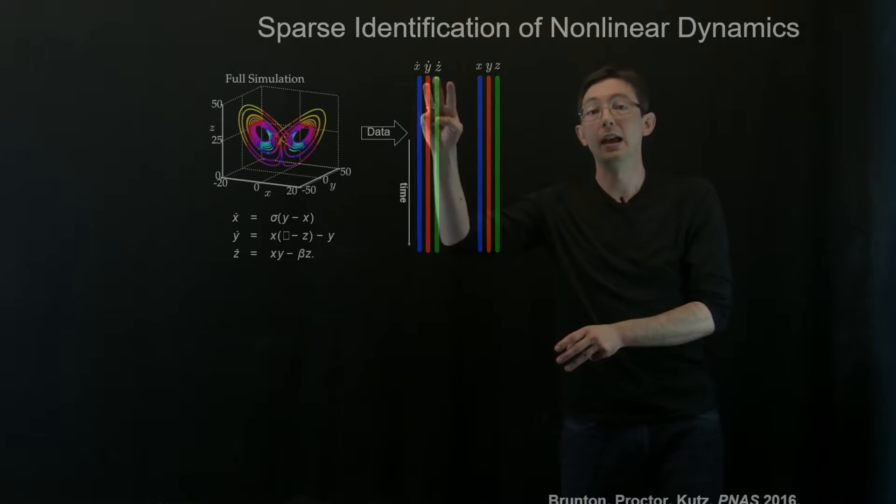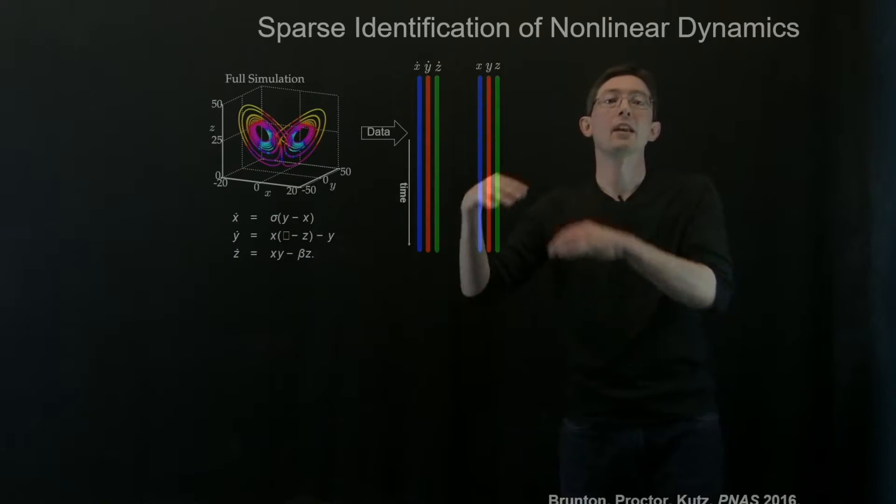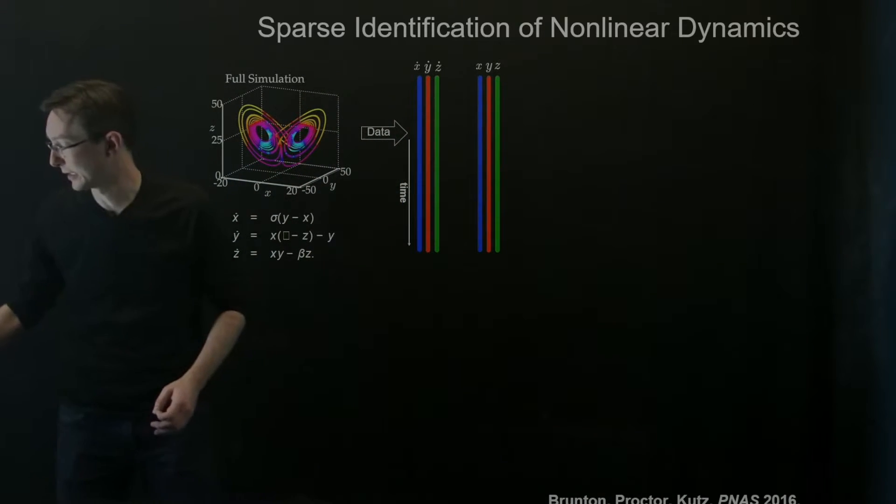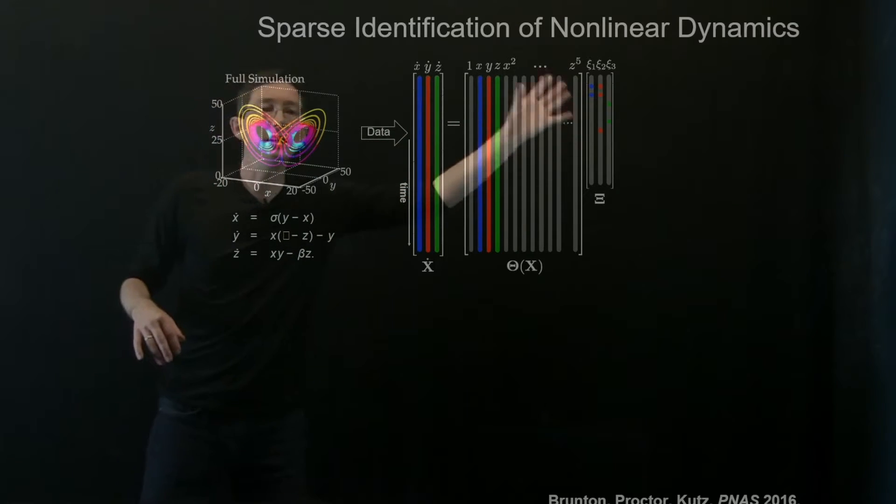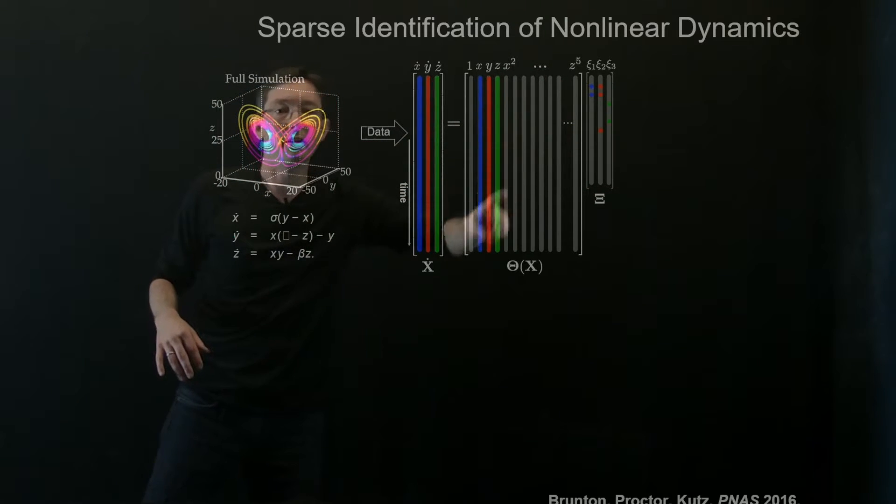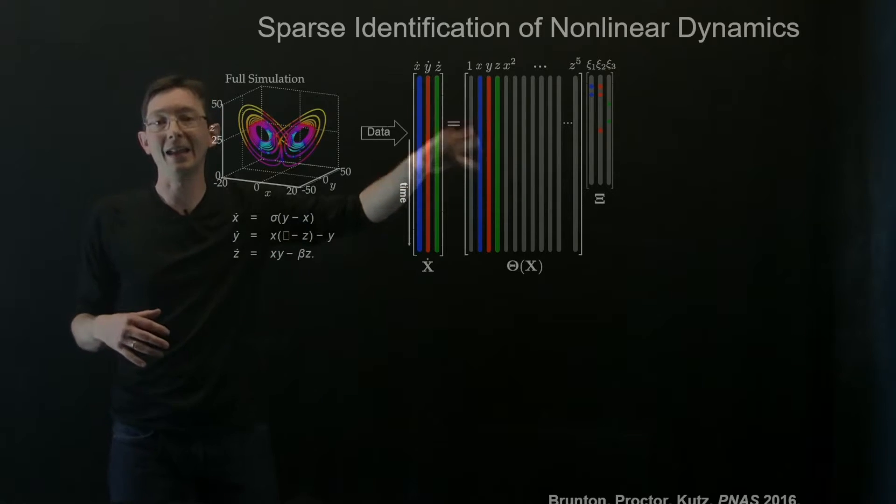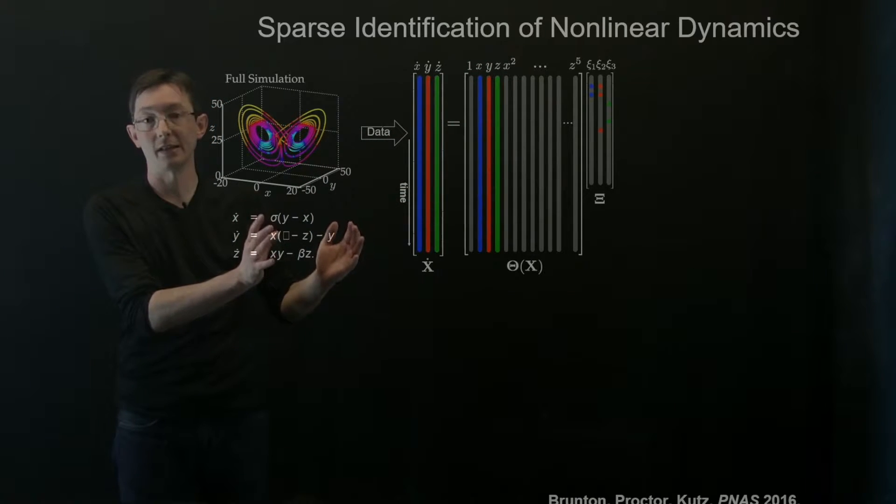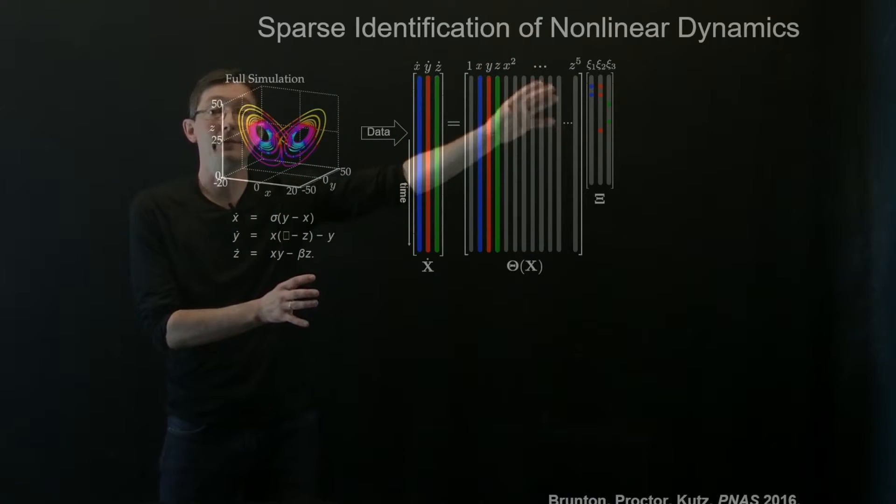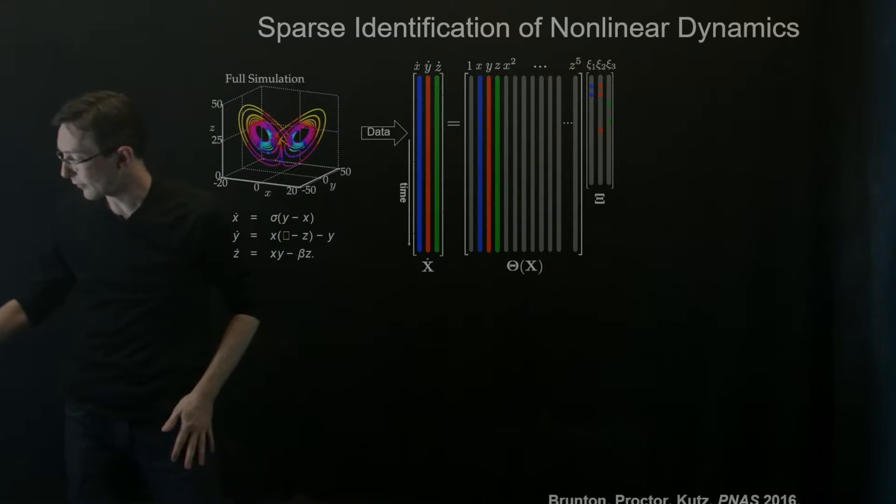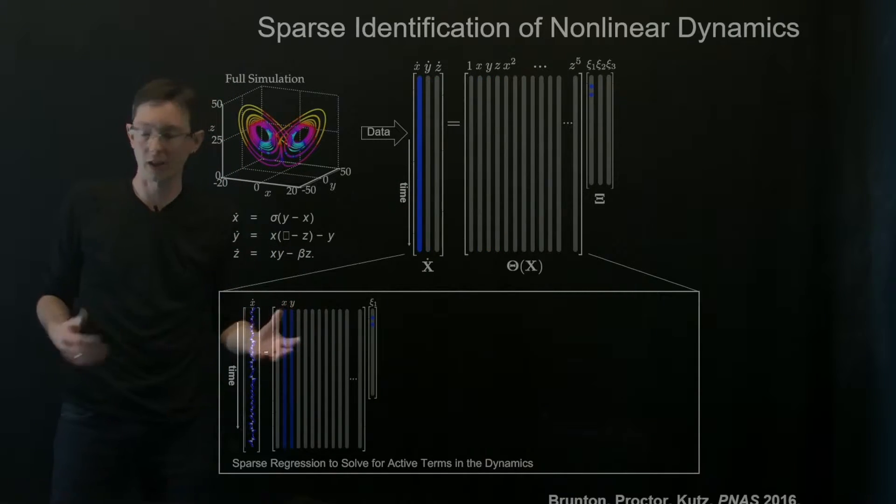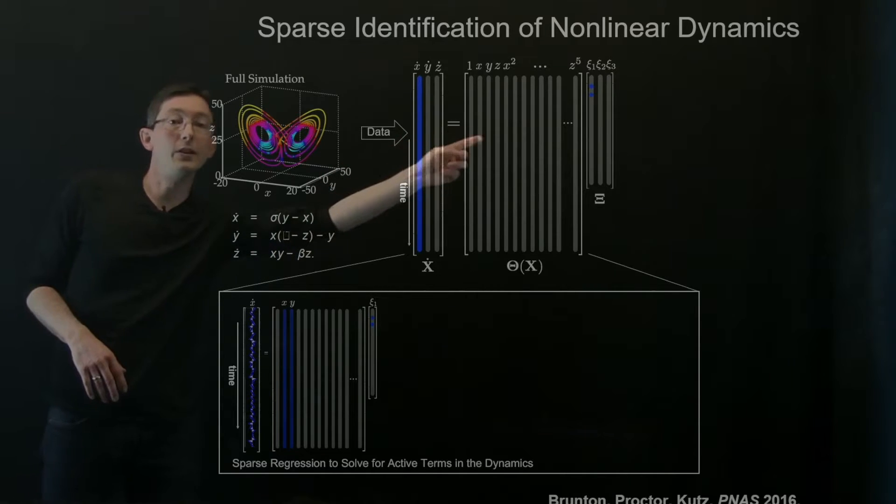And what SINDy does is it essentially builds this nonlinear library theta of x of all of the candidate functions that could be in these right-hand side dynamics. These can be evaluated with data, and then it uses sparse regression to find the fewest columns in this library.